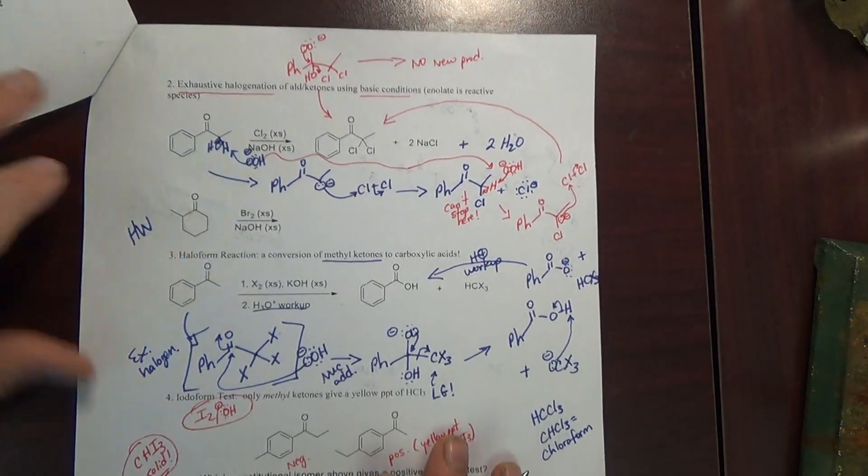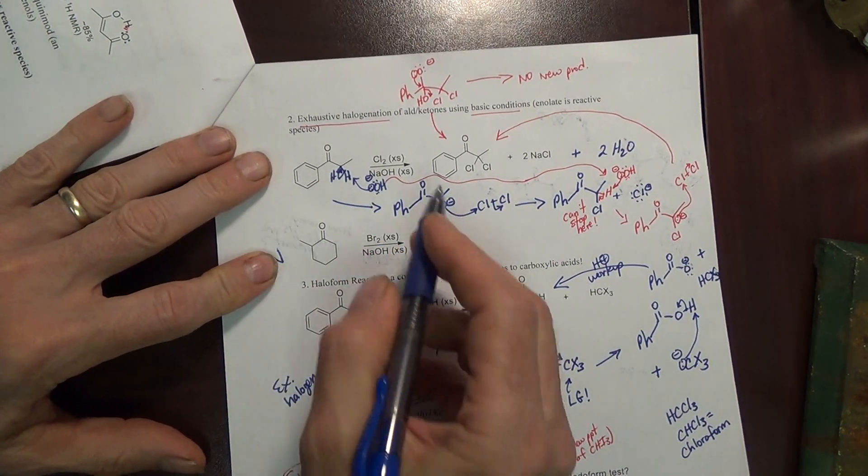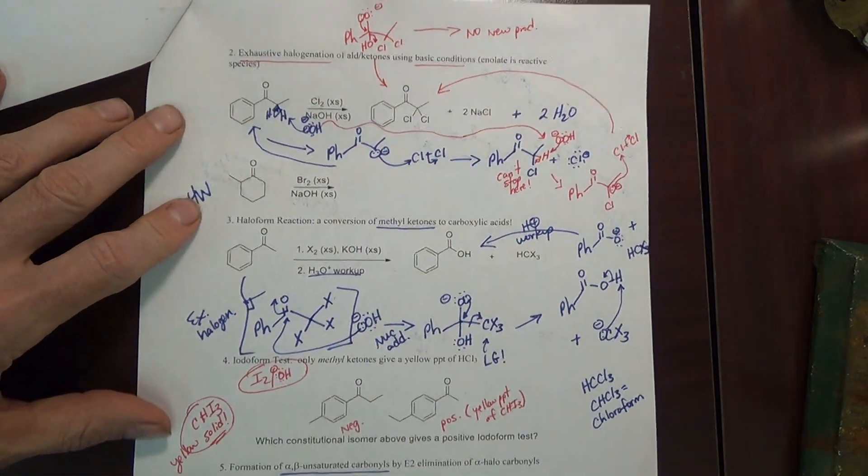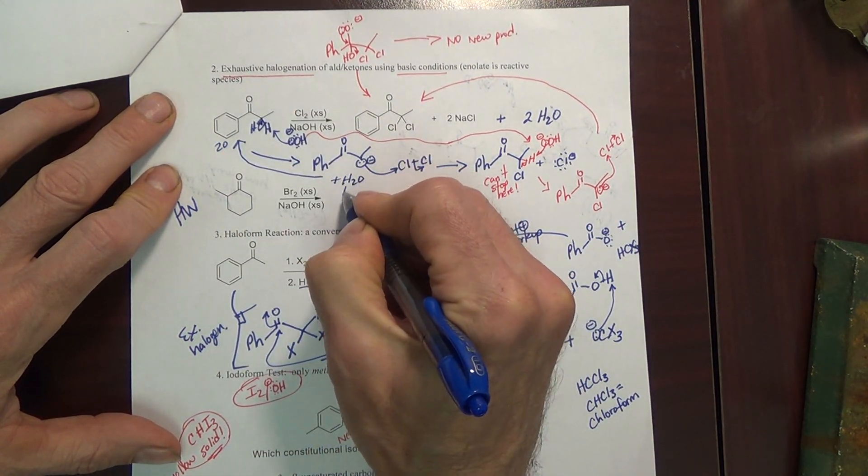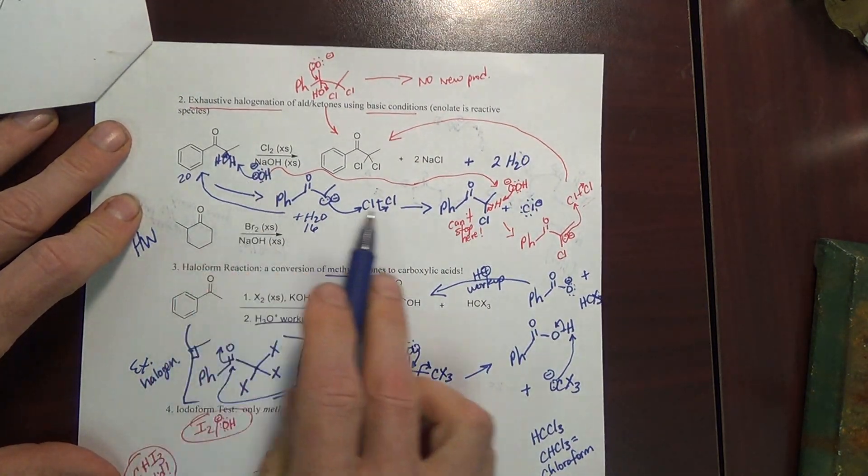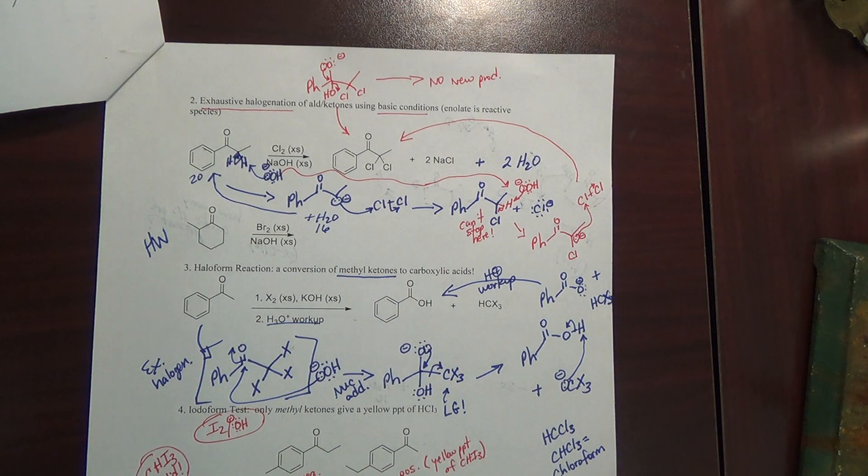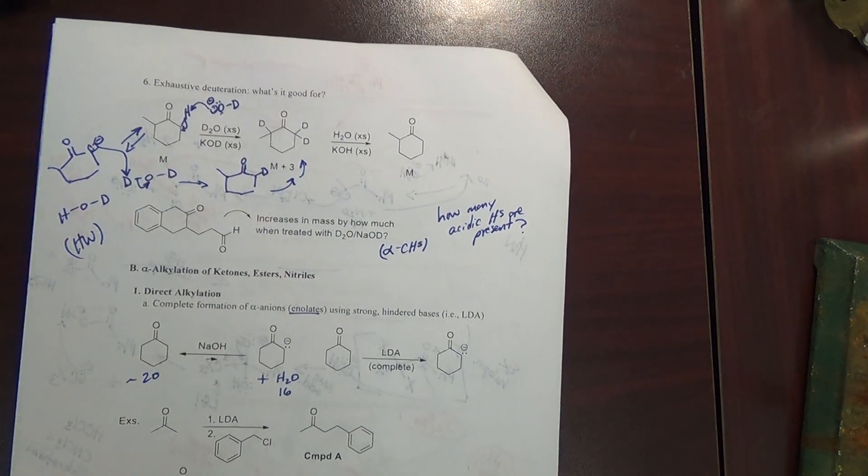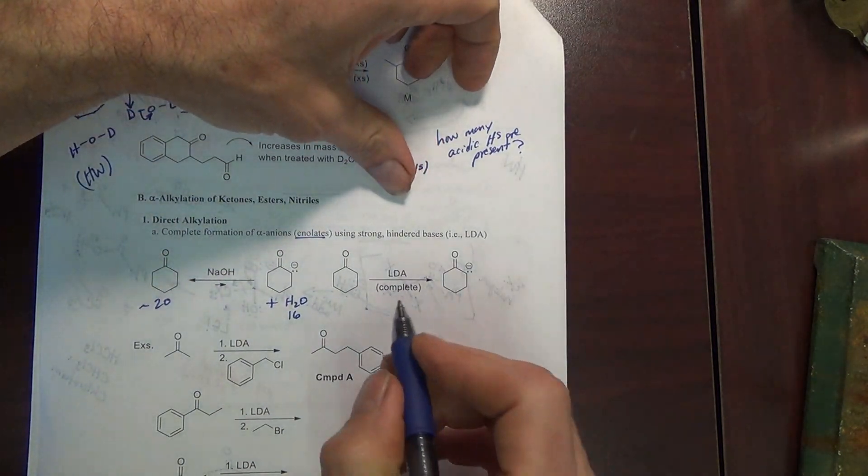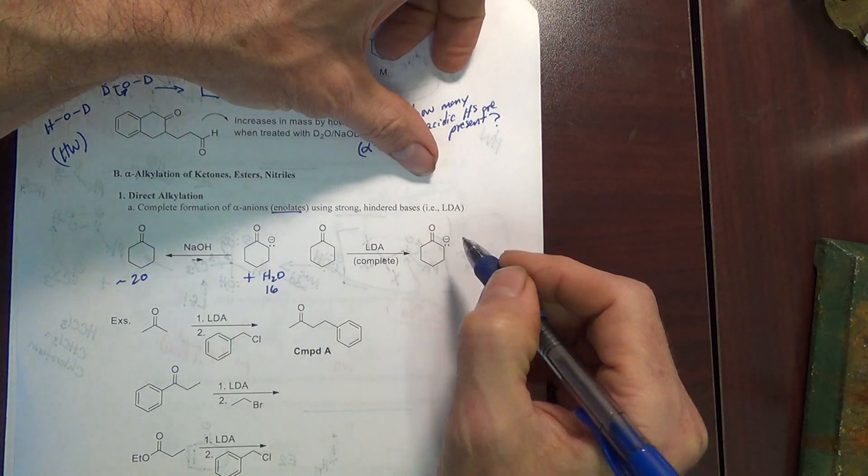When you do alkylation, you need to completely make the enolate. When we do bromination or halogenation, you do not need to. This equilibrium actually favors there, because this is 20, we make that plus H2O, it's the same story, that's 16. But the halogenation will work even though this is a poor equilibrium. To fully explain why would take us about 15-20 minutes and then we need a cup of coffee. But when you do alkylation, it doesn't work.